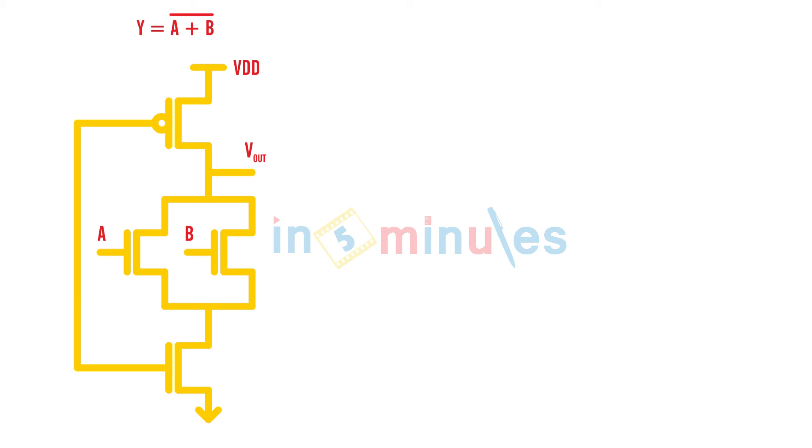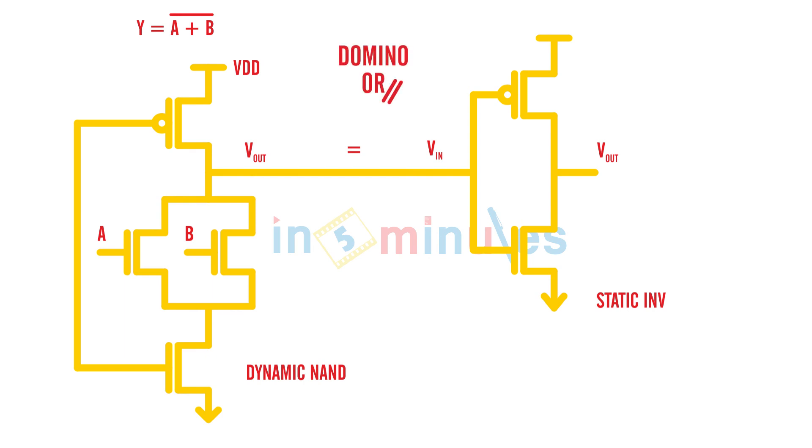We saw the problem of monotonicity, so this needs to be followed by a static inverter. This is the input which is the same as this output, and this is nothing but static inverter. This together becomes your domino OR.